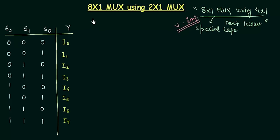Let's move to the implementation of 8x1 using 2x1. The first thing I explained in the last presentation is to see the number of input data lines of the required MUX and the available MUX. If N1 is the input data lines of the required MUX, which is 8x1, it equals 8. And the input data lines of the available MUX, that is 2x1 MUX, N2 equals 2. The next step is to divide 8 by 2, which equals 4. Then take 4 and divide it by 2, which is 2. Take 2 and divide it by 2, which is 1. Now stop.